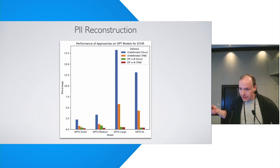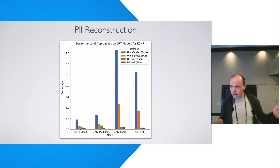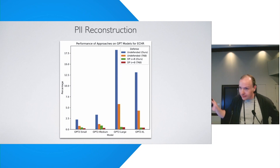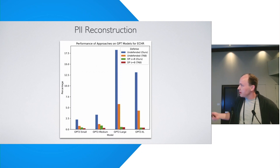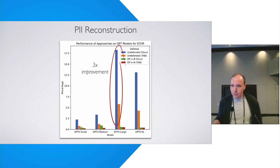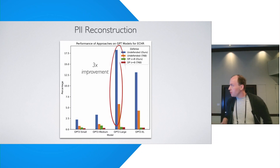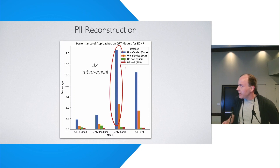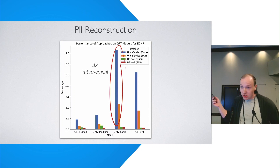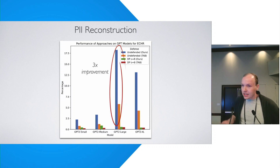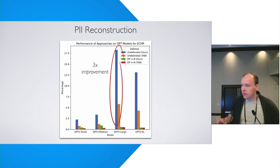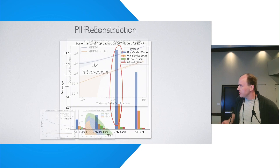With this attack — omitting some details for the sake of the presentation — we get massive improvements in PII reconstruction. For the ECHR law dataset, we measure a 3x improvement over the naive PII extraction attack.